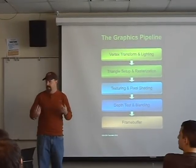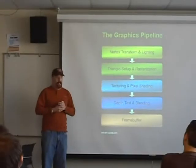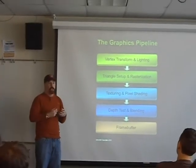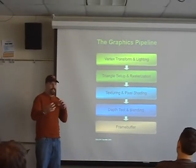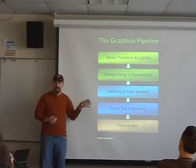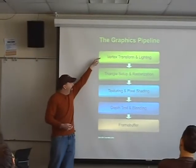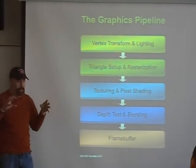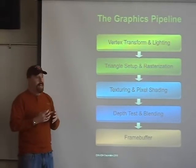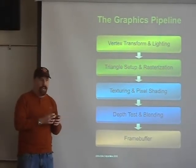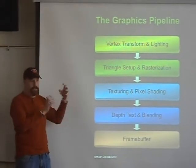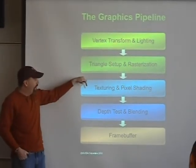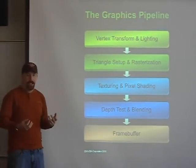If you've taken any graphics classes, you've seen matrix transforms where you generally have a model transform that transforms your model into world space, and then some sort of projection transform that turns world space things into screen space things. Triangle setup and rasterization — after you've done transform and lighting work — you'll be taking all of your vertices, turning them into primitives, clipping those triangles maybe into smaller triangles, and then rasterization, which is the process of taking those final clipped triangles and turning them into a ton of pixels. Those pixels then get sent further down the pipeline where we do texturing and any sort of fancy shading work.